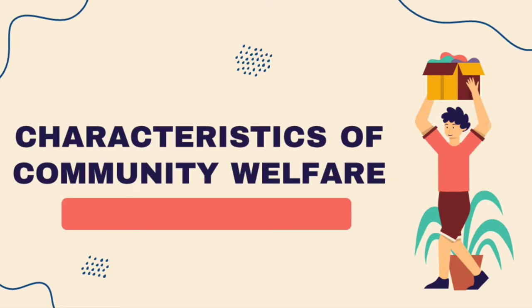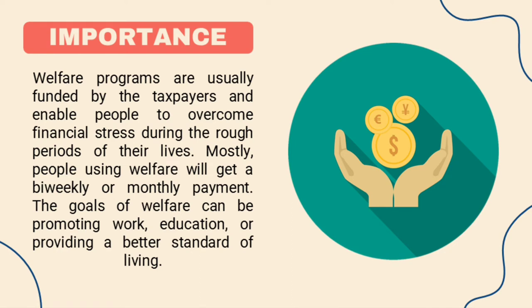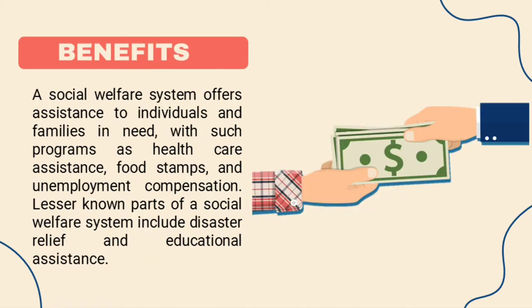Characteristics of Community Welfare. Importance: Welfare programs are usually funded by taxpayers and enable people to overcome financial stress during the rough periods of their lives. Mostly, people using welfare will get a bi-weekly or monthly payment. The goals of welfare can be promoting work, education, or providing a better standard of living. Benefits of Community Welfare: A social welfare system offers assistance to individuals and families in need with such programs as health care assistance, food stamps, and unemployment compensation. Lesser-known parts of a social welfare system include disaster relief and educational assistance.